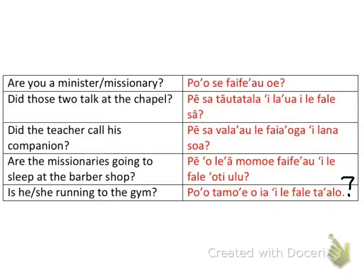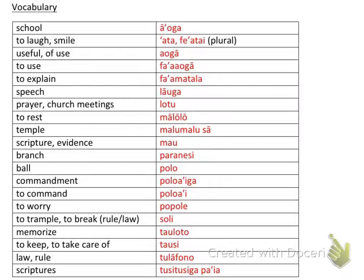If you need to continue practicing this, I recommend rewatching the video. Your best friend when you learn a language is repetition. Here is some vocabulary I want you to work on. Most of them are easy to pronounce at this point. The one that might be a little tricky is the word for 'to smile' or 'to laugh' — the singular version is just 'ata', but 'feata'i' is the plural version, meaning multiple people are laughing or smiling. Okay guys, until next time, tofā soifua.